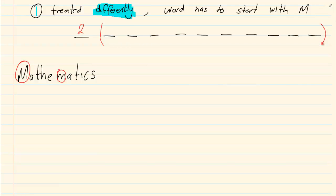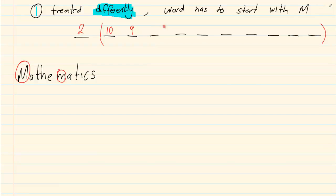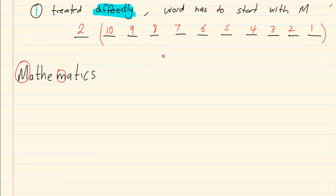The letters are different and cannot be repeated. In the first position, the word must start with M. Even though there are two M's, you can put the first M or the second M — so there are 2 options for that position. The remaining ten positions then have 10, 9, 8, 7, 6, 5, 4, 3, 2, 1 options. That gives us 2 times 10 factorial.